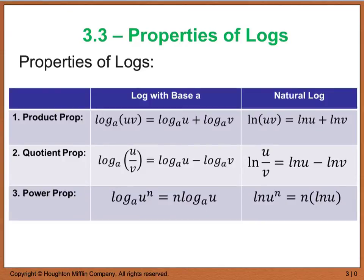From section 3.2, we talked about how log functions with a base A were really inverse functions of exponential functions with base A. As a result, we also have properties of logs. We have three properties. The first is called the product property: if we are taking the log base A of U times V, we can rewrite this as log base A of U plus log base A of V. This can make it easier to solve.